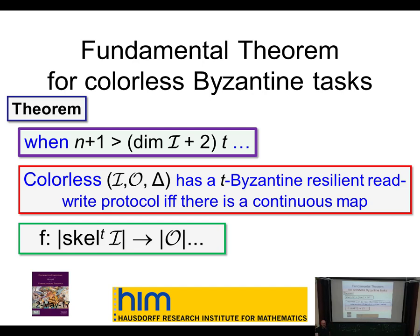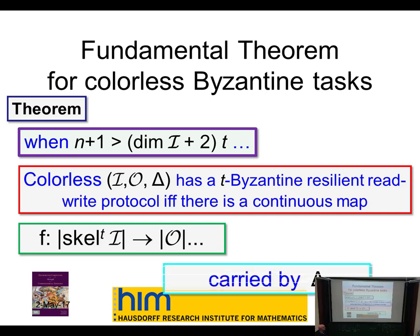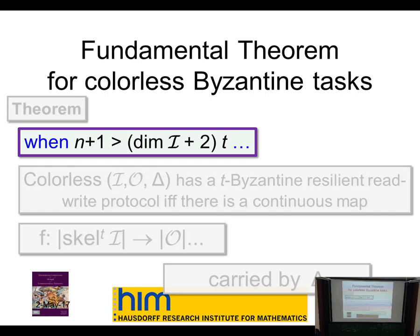You drop down to the t-skeleton, find a continuous map, and we can turn that map into an algorithm. We can show that if an algorithm exists, then this continuous map exists. The only difference between crash failure and Byzantine is this restriction on the dimension — the crash failure model has no restriction on dimensions. What this says is that Byzantine adversaries are powerful: you must ensure there aren't too many of them. In the crash failure model, no matter how many crash failures you have, there's something interesting you can do unless everyone crashes.